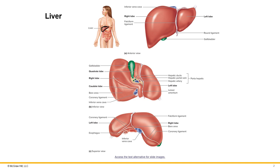The liver has four lobes. Here you can see the right lobe, which is the largest, then you have the left lobe. They are separated by a connective tissue ligament called the falciform ligament, which separates the right lobe and the left lobe in this interior view. In the inferior view, you are still seeing the right lobe and the left lobe, with the falciform ligament visible here.